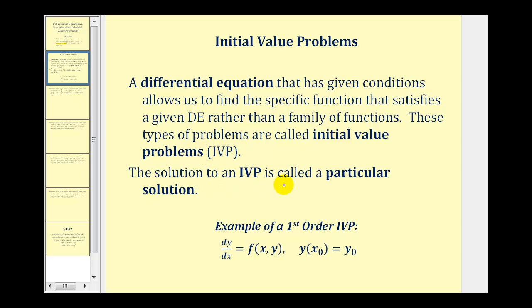The solution to an IVP is called a particular solution. Here's an example of a first order IVP: we're given the differential equation dy/dx equals f of x,y, but we're also given that y of x-zero equals y-zero. It's this information that allows us to find the particular solution.